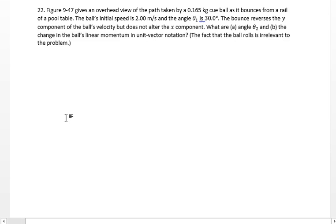Alright, so in problem 22, we have a cue ball that bounces off of a rail, and it's got an initial speed of 2 meters per second at an angle of 30 degrees from the normal, I believe, to the rail.